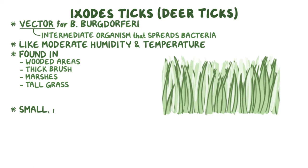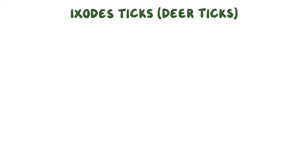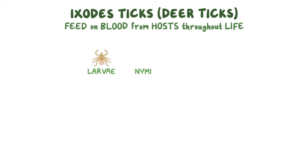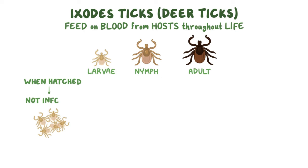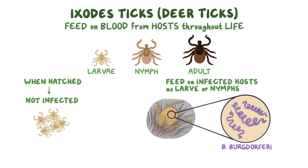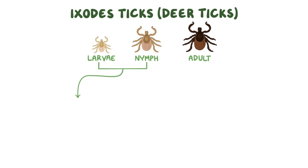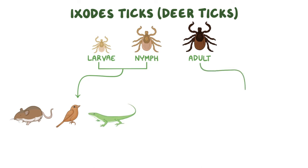These ticks are small, and even adults are only about 3 mm long, so they can be hard to notice. Ixodes ticks feed on the blood from hosts throughout their life stages of larva, nymph, and adult. When they hatch as larvae, they are uninfected. When they feed on infected hosts as larvae or nymphs, they can pick up the B. burgdorferi bacteria. In the younger stages of their life, they often feed on smaller animals like rodents, birds, and even lizards. When they grow into adults, they move on to larger mammals like dogs, cats, and horses.